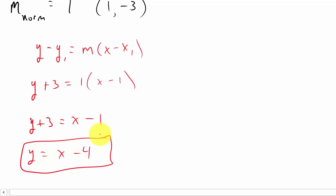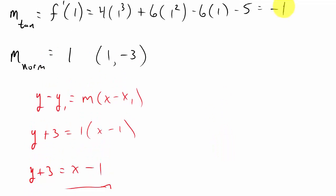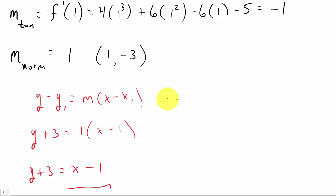Just remember: all you have to do is take the derivative of the function and evaluate it at the point they give you — that gives you the slope of the tangent line. Then take the negative reciprocal of the slope of the tangent line, and that gives you the slope of the normal line. Then use point-slope form to find the equation of the line. I hope this video helped — check out my other videos and subscribe if you like them.